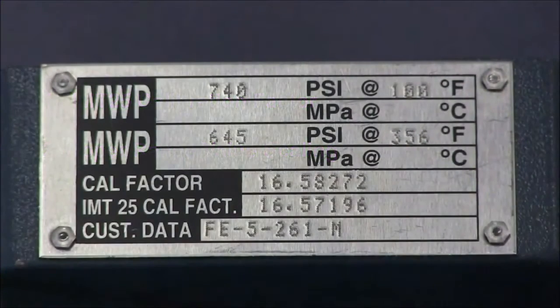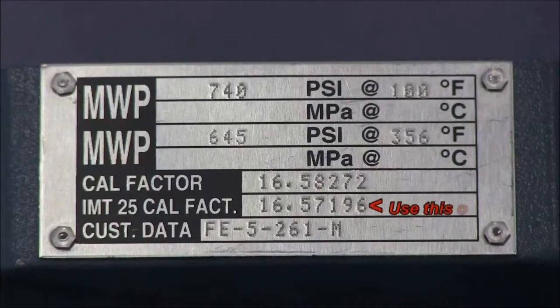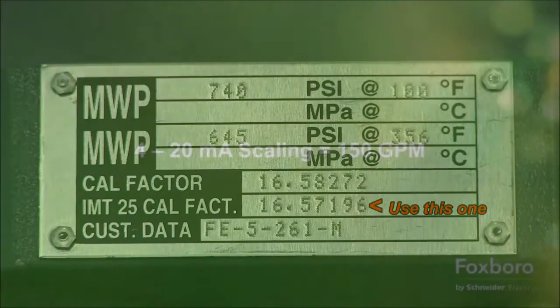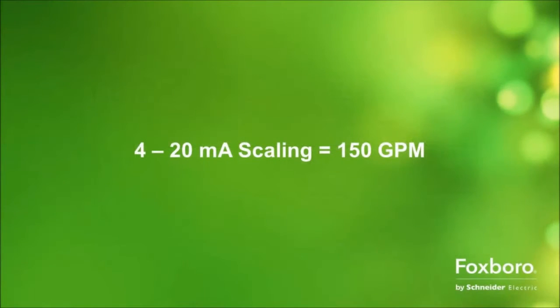Here we show a data plate from an 8000 series flow tube. Since we'll be configuring an IMT25 transmitter, we'll use the IMT25 calibration factor. For this example, we'll use an upper range value scaling of 150 gallons a minute.